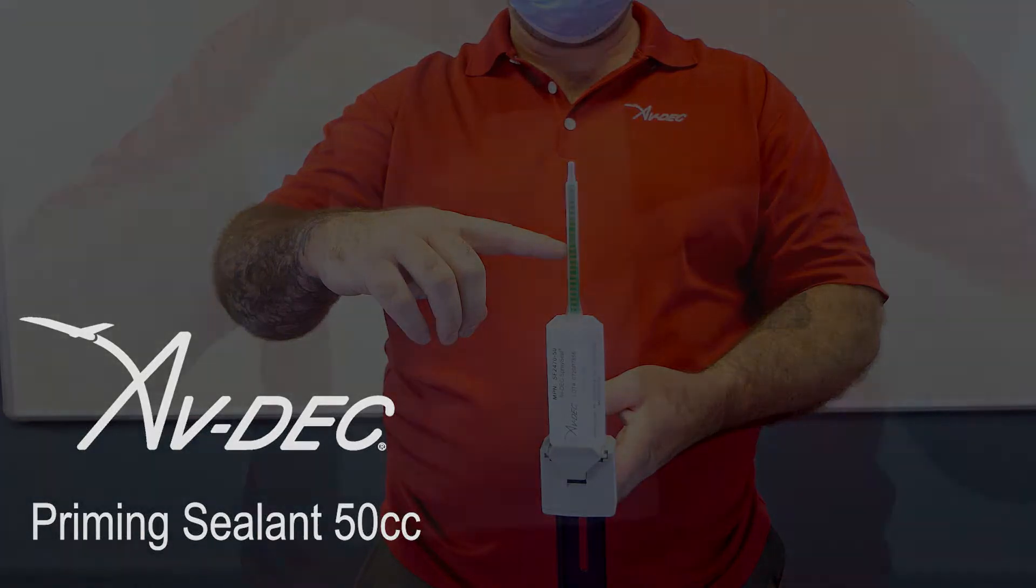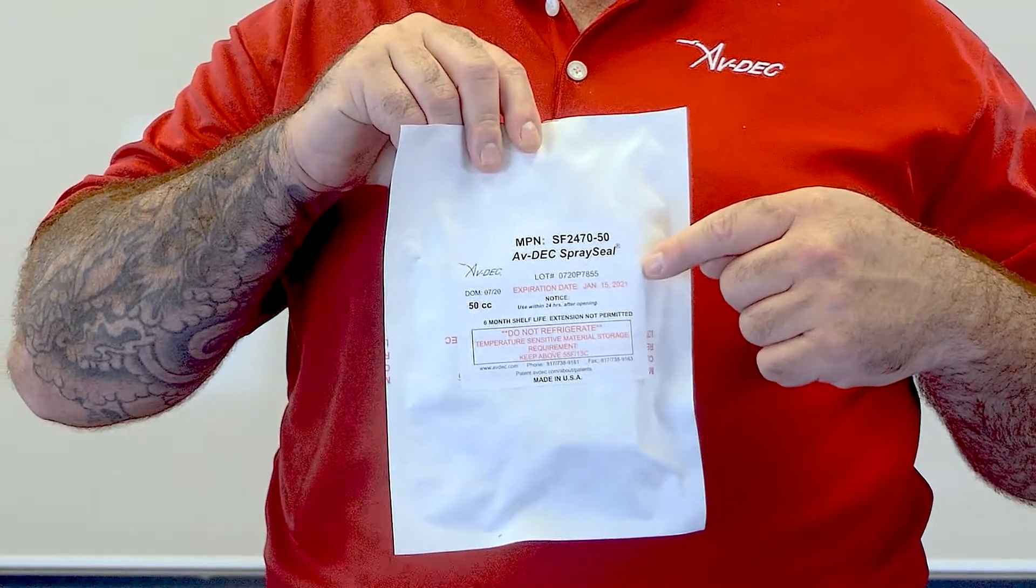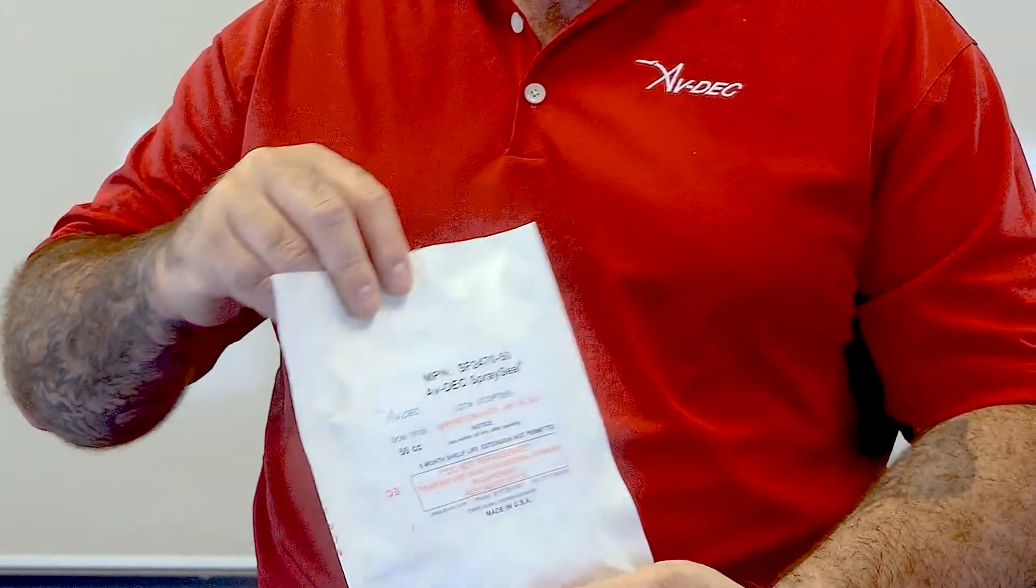Priming Sealant 50cc. Check the expiration date on the outer packaging to ensure that the material has not exceeded the shelf life.